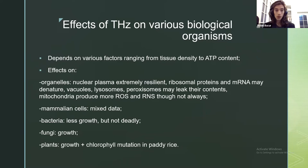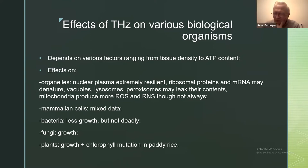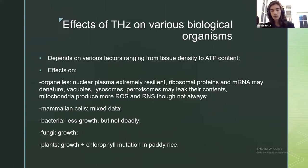Leaking vacuoles may compromise cell function or even kill them. Mitochondria seem to produce more reactive oxygen species and nitrogen species, though not always. As always, it's dependent on the species that is studied.